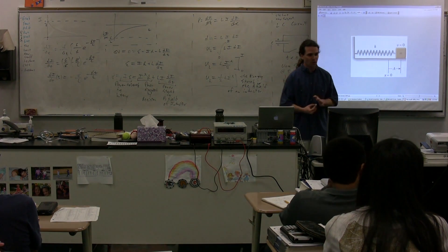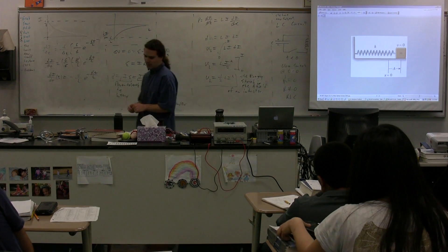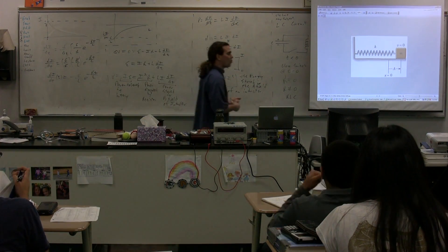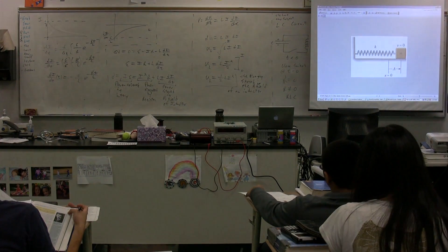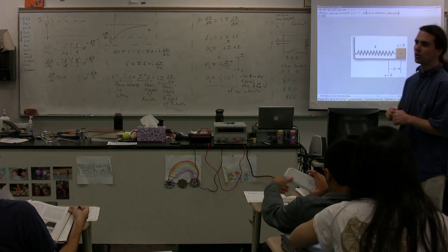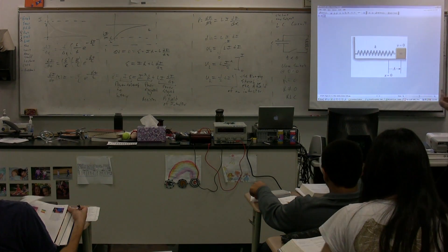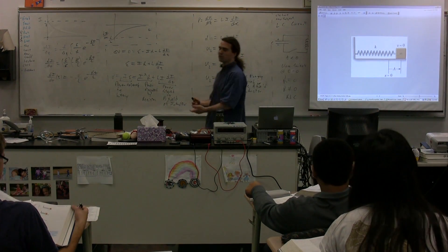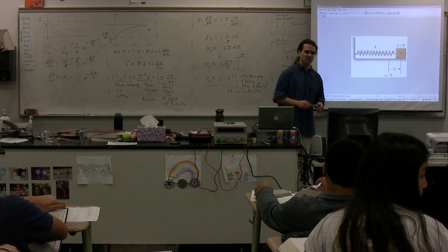I would suggest that you open up your textbook to page 1017. I'm going to walk through a bunch of figures on page 1017. It will be very helpful for understanding what's going on here. So, we're going to go back to a simple harmonic motion example that you're much more familiar with, which is a mass-spring system.